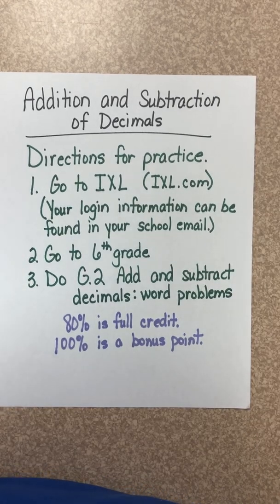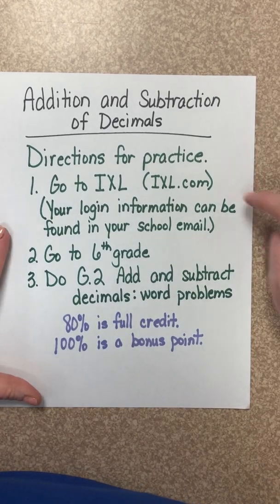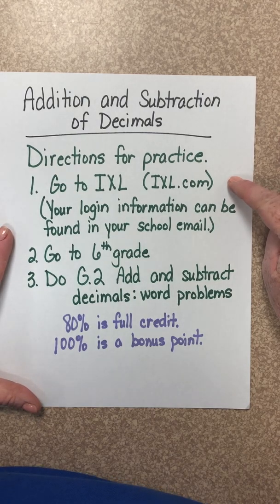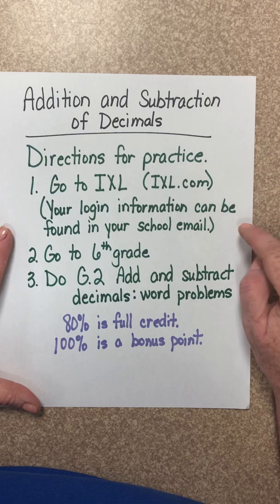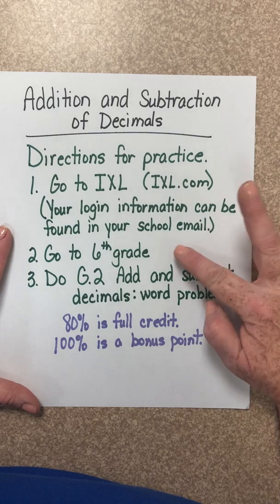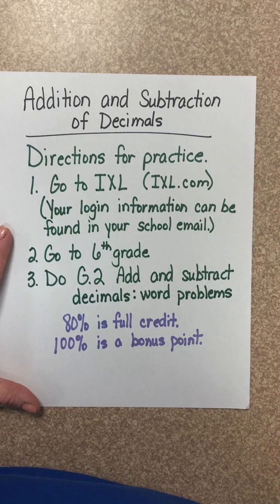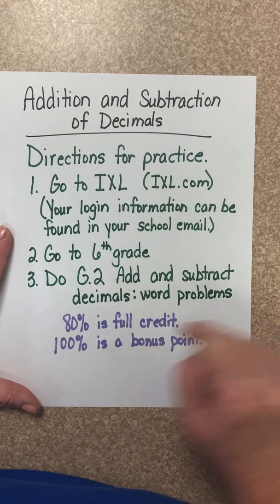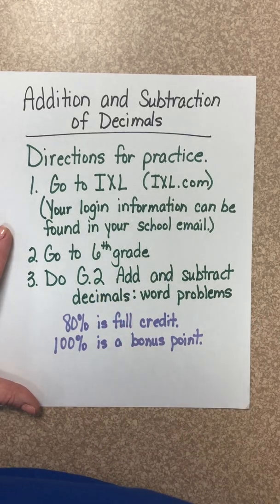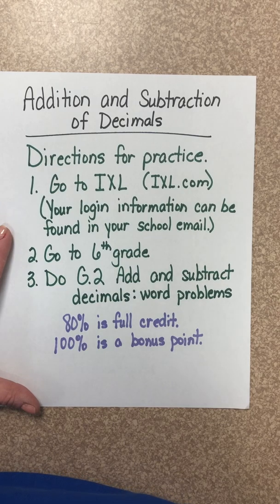Now let's look at the directions for practice. I want you to go to IXL, which is IXL.com. Your login information can be found in your school email. Please go to 6th grade, and I want you to do G2, add and subtract decimals, word problems. This is a graded assignment. 80% is full credit, and if you reach 100%, you receive a bonus point.